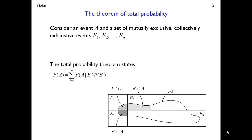In order to utilize this, we need two sets of events. First, we're going to have an event A — that's the one we're interested in. And then we're going to have a set of mutually exclusive, collectively exhaustive events E1 through En. Mutually exclusive means there are no outcomes in common, so any outcome will be in only one of these events. Collectively exhaustive means any possible outcome is in one of these events, so every outcome in the sample space is in exactly one of E1 through En.